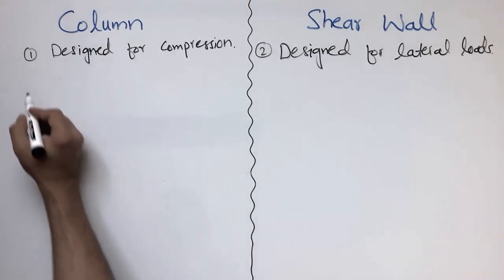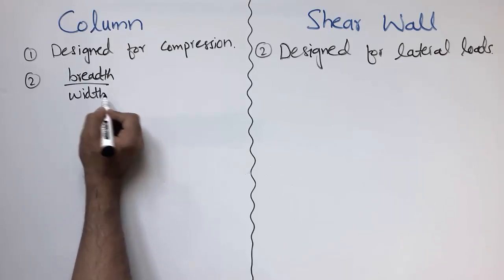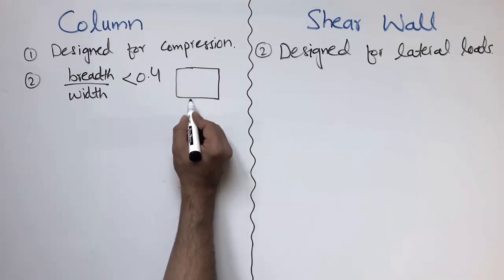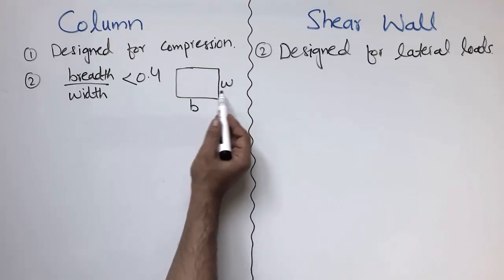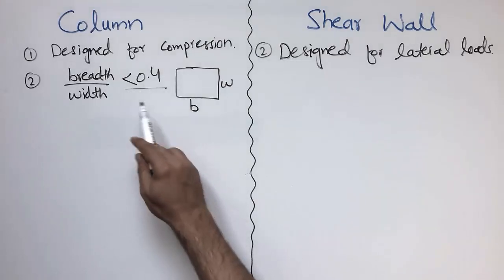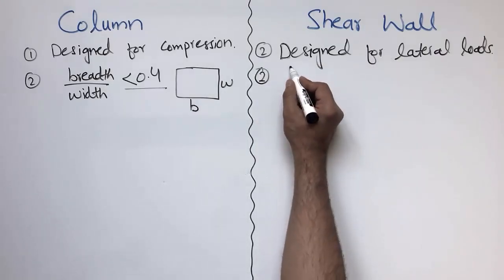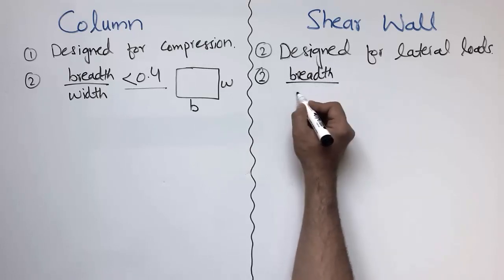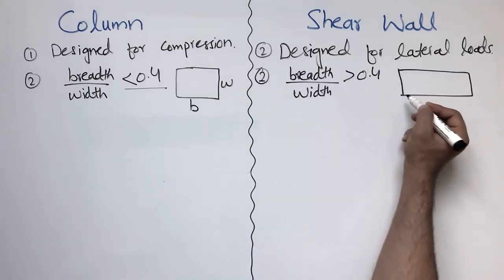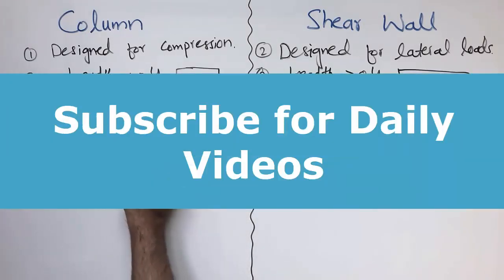The second difference between the column and the shear wall is the cross section. Generally, the breadth-to-width ratio of the column is less than 0.4. If you consider the breadth and width of the column cross section, their ratio is generally less than 0.4. In case of the shear wall, the breadth-to-width ratio is generally greater than 0.4, meaning the breadth is always greater than the width by a large amount.